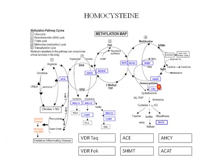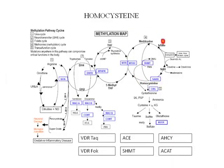Homocysteine is a breakdown product of protein metabolism and a component of the methyl cycle. When we do genomic testing, we look at all the enzymes that play a role in homocysteine metabolism. An elevated homocysteine is associated with an increased risk of all forms of cardiovascular disease, neurologic disease, rheumatoid arthritis, and miscarriage. It's associated with so many disease states because it reflects abnormal methyl cycle function and genomics.